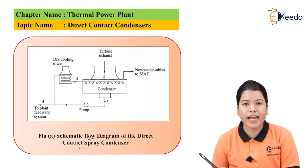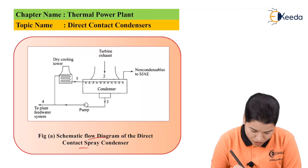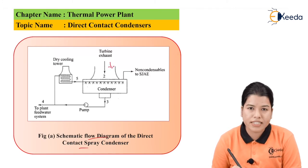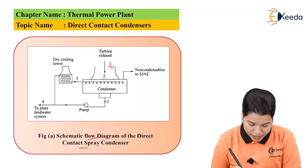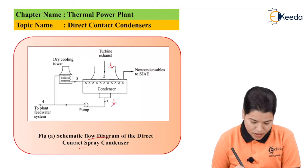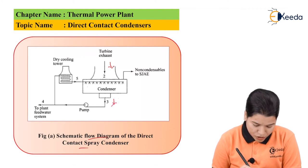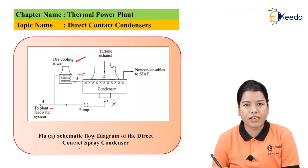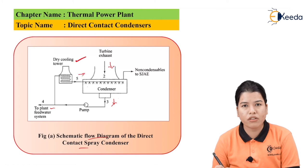The figure shows the schematic flow diagram of the direct contact spray condenser. The steam from the turbine is let into the condenser where it gets condensed, then it is given to the plant feed system. The dry cooling tower also supplies cooling water to the condenser, and these cycles keep on repeating.